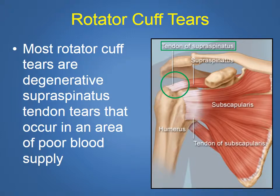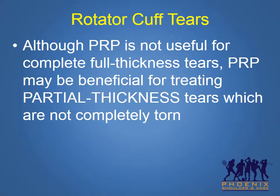Most rotator cuff tears of the shoulder are degenerative supraspinatus tendon tears that occur in an area of poor blood supply. Although PRP is not useful for treating complete, full-thickness rotator cuff tears, PRP may be beneficial for treating partial-thickness tears which are not completely torn.